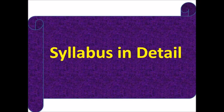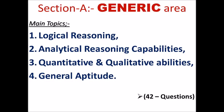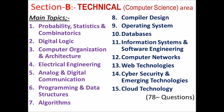The question paper has two sections. Section A is the generic area. There are four main topics, covering 42 questions. These are: first, logical reasoning; second, analytical reasoning capabilities; third, quantitative and qualitative abilities; and fourth, general abilities.